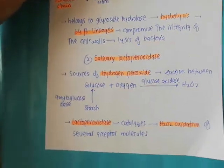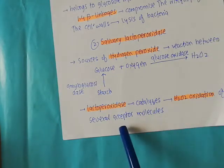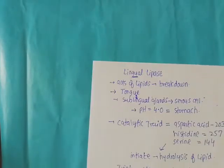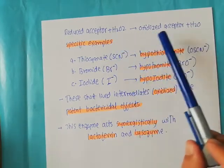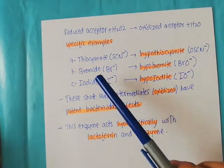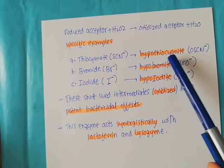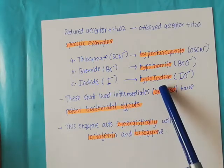What lactoperoxidase does is that it catalyzes the hydrogen peroxide oxidation of several acceptor molecules. In general, a reduced acceptor in the presence of hydrogen peroxide and lactoperoxidase is converted into oxidized acceptors and water. For specific examples: thiocyanate reacting with hydrogen peroxide gives hypothiocyanate; bromide is converted into hypobromide; and iodide into hypoiodide.